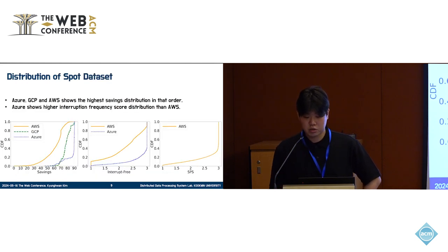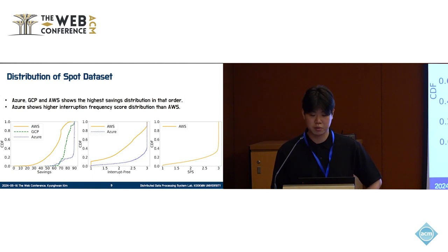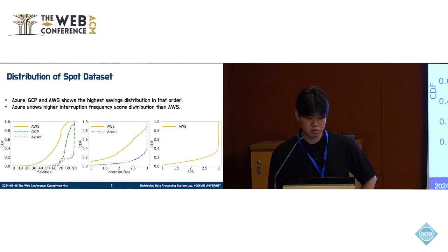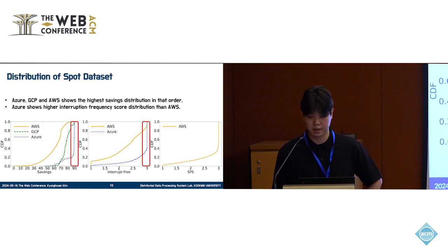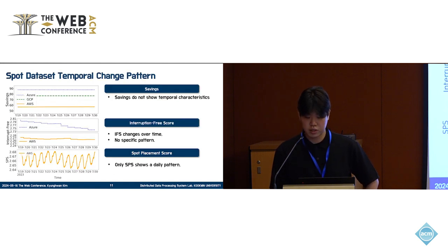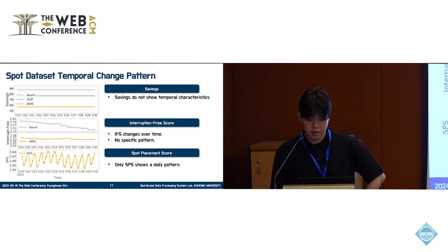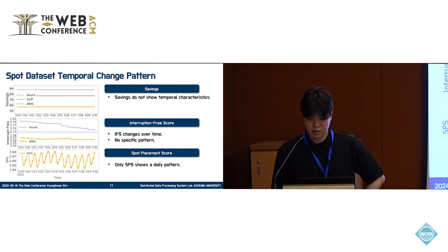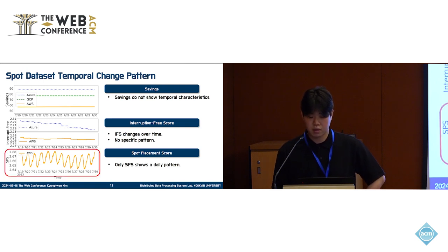From now on, I will show you the results of analysis on the Spot dataset. The first analysis focuses on the distribution of the Spot dataset. These CDF figures show the distribution average of each Spot instance's Spot dataset over a period of 10 months starting from November 2022. Notably, Azure exhibits a higher distribution in savings and interruption frequency score compared to the other vendors. We then checked the temporal change pattern of the Spot dataset. The horizontal axis shows elapsed dates since July 19, 2023, and the vertical axis represents the average of each Spot dataset. The figures show that savings do not exhibit a temporal characteristic, and the interruption frequency score shows changes over time but no specific patterns. Notably, only SPS data shows regular change patterns, so we analyze the SPS temporal patterns in more detail.